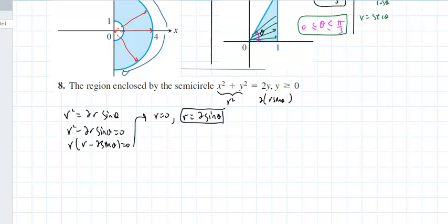That takes care of the equation, but I still have to worry about y is greater than or equal to 0. That means theta must always be between 0 and pi, ensuring that y is always above the x-axis.